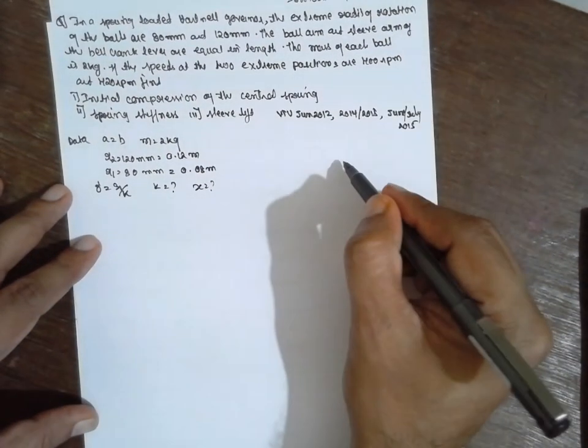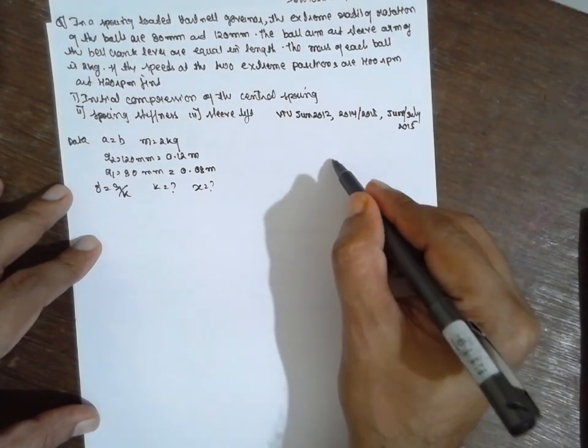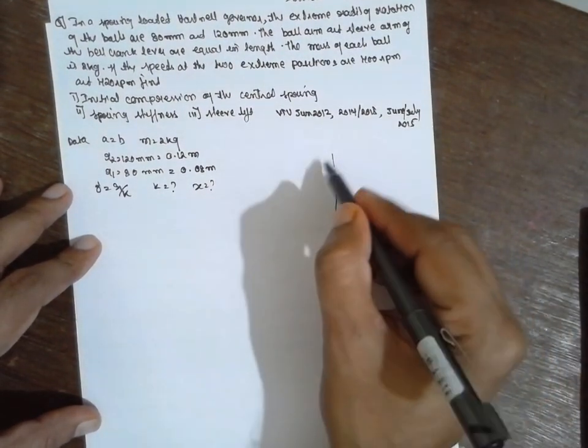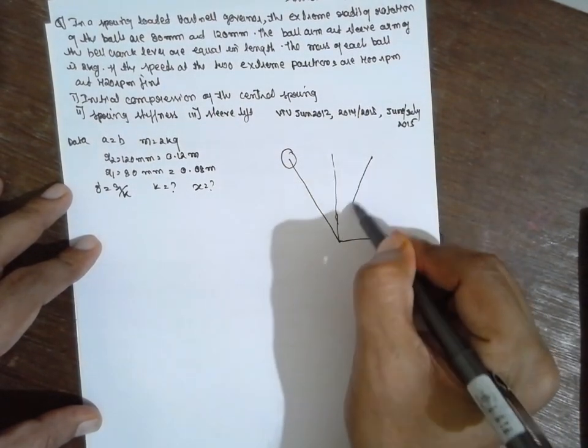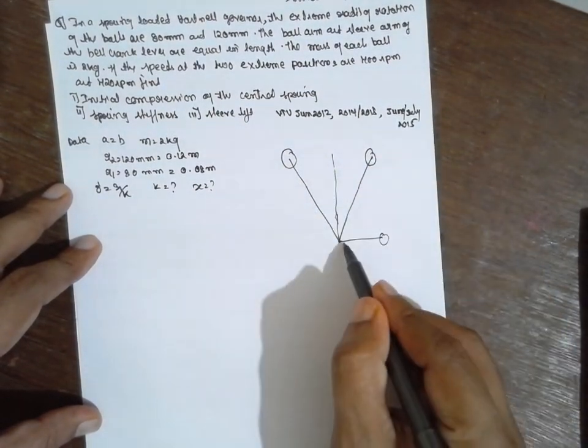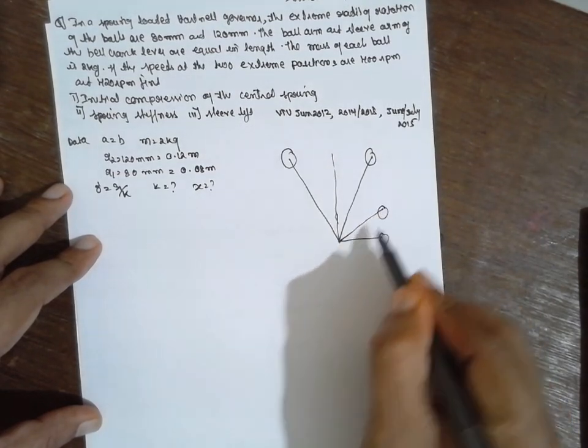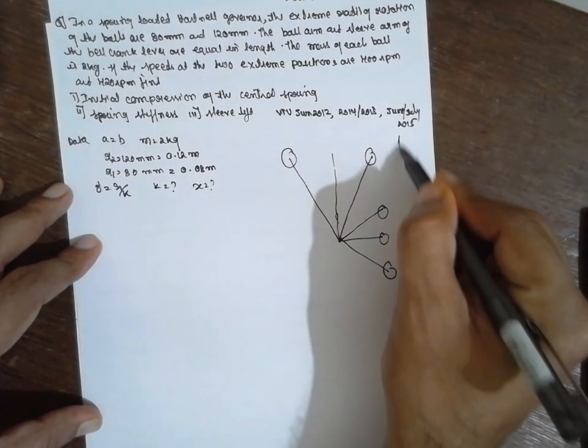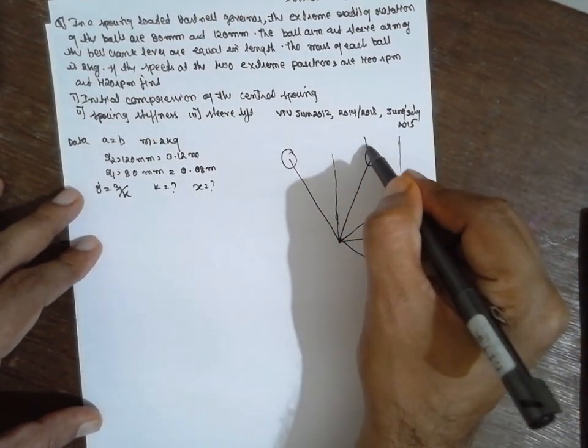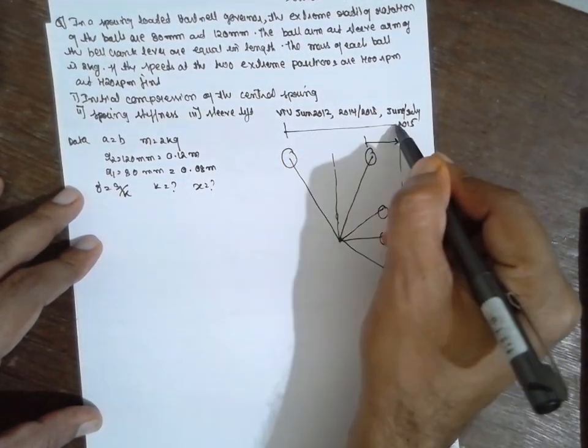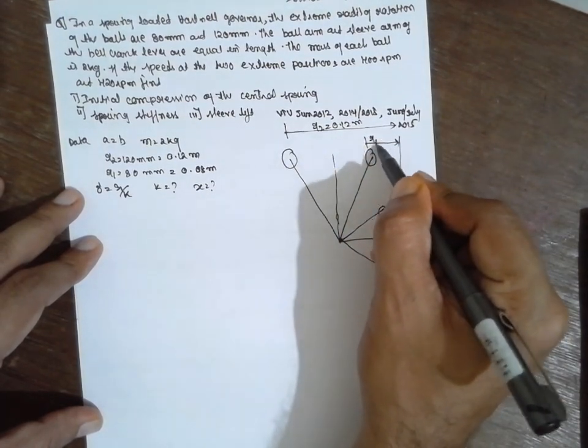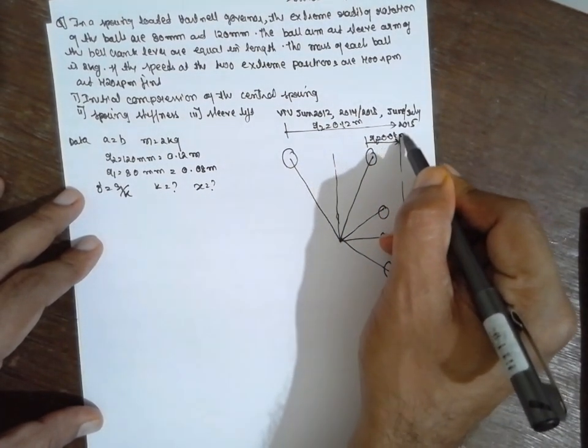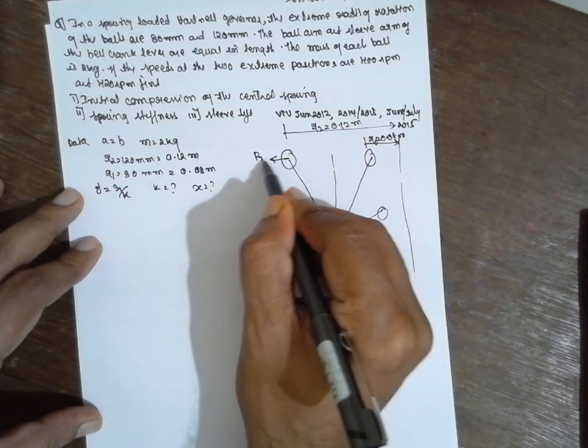The diagram for this one is very simple, the same diagram. But they are given two extreme radius. This is the axis. This is R2. R2 is equal to 0.12 meter. R1 is nothing but 0.08 meter. This is F2, this is F1.